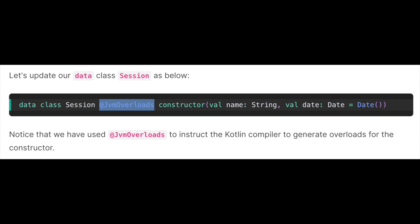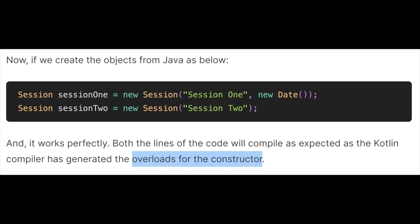Now let's update our data class Session by adding the JvmOverloads annotation, as I have highlighted here. We use the JvmOverloads annotation to instruct the Kotlin compiler to generate overloads for the constructor so that we can call it from Java. Now if we create session1 and session2 from Java — where session2 does not pass the date — it will work, because internally it will generate overloads for us. Both lines of code will compile as expected.